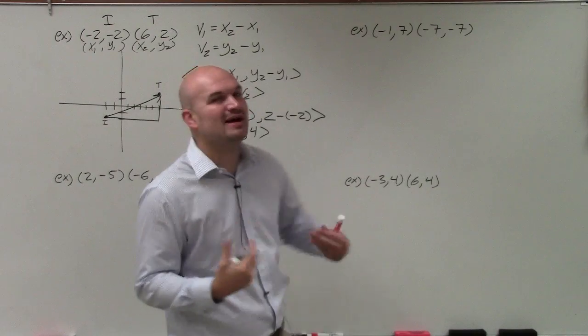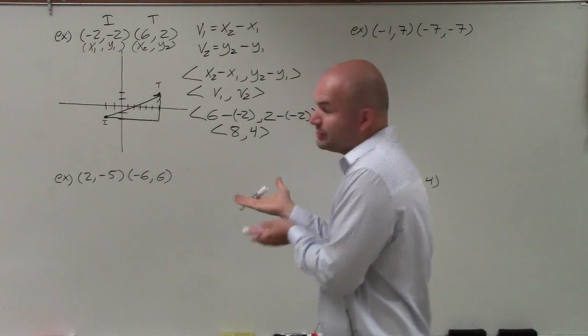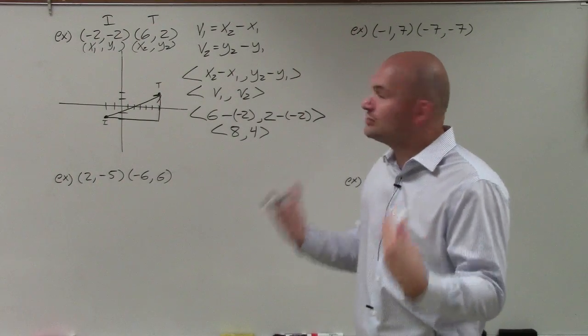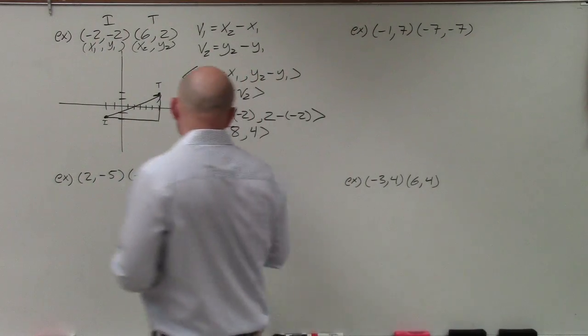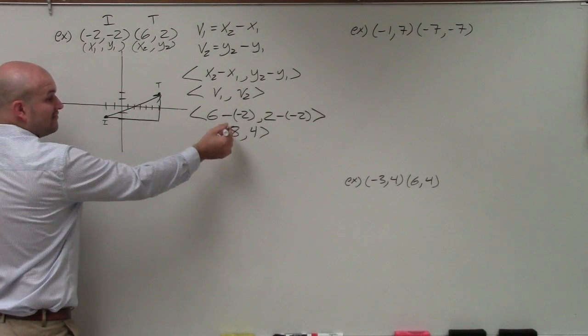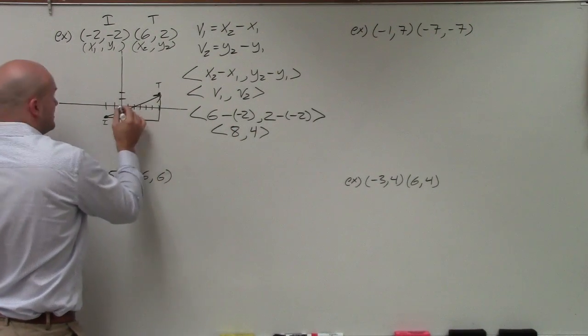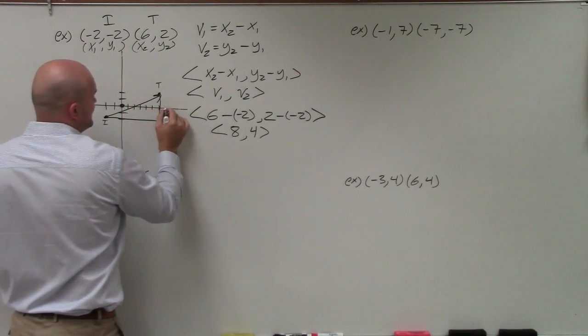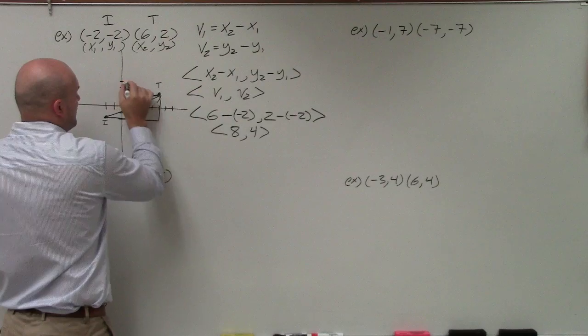Now, what's nice about this is let's go ahead and graph this component form. The reason why I wanted to do at least one sketch is for you to visualize what this vector looks like compared to my initial vector. So we go to 8, 4. So from now, remember, this is in component form. So that means it starts at 0, 0. And then I'm going to go over 8: 1, 2, 3, 4, 5, 6, 7, 8. And then up 4: 1, 2, 3, 4.